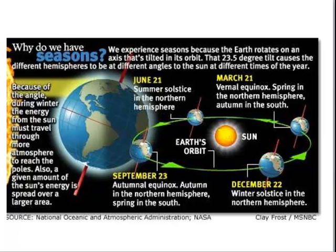We experience seasons because the Earth rotates on its axis that's tilted in its orbit. That 23 and a half degree tilt causes the different hemispheres to be at different angles to the Sun at different times of year. During winter, the energy from the Sun must travel through more atmosphere to reach the poles, and a given amount of the Sun's energy is spread over a larger area. March 21st is the vernal equinox — spring in the Northern Hemisphere and autumn in the Southern Hemisphere. September 23rd is the autumnal equinox — autumn in the Northern Hemisphere and spring in the Southern Hemisphere. The summer solstice is June 21st, and the winter solstice is December 22nd.